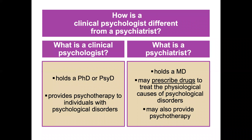The next slide differentiates between a clinical psychologist and a psychiatrist, and there are some pretty big differences in terms of training. A clinical psychologist holds a PhD — Doctor of Philosophy, which usually has more of a research component — or a PsyD, Doctor of Psychology, which is geared more toward clinical practice. Clinical psychologists provide psychotherapy, whereas a psychiatrist holds an MD, may prescribe drugs to treat physiological causes of psychological disorders, and sometimes also provides psychotherapy.